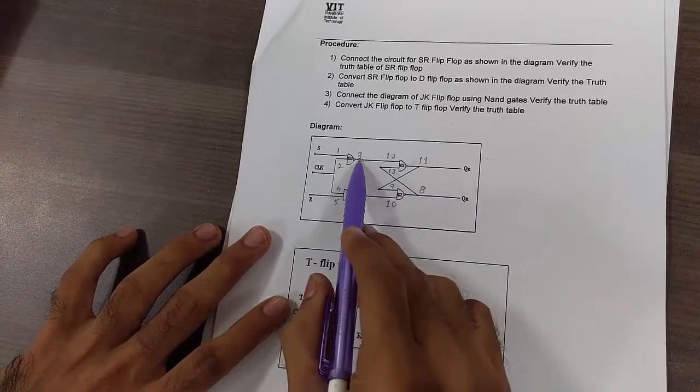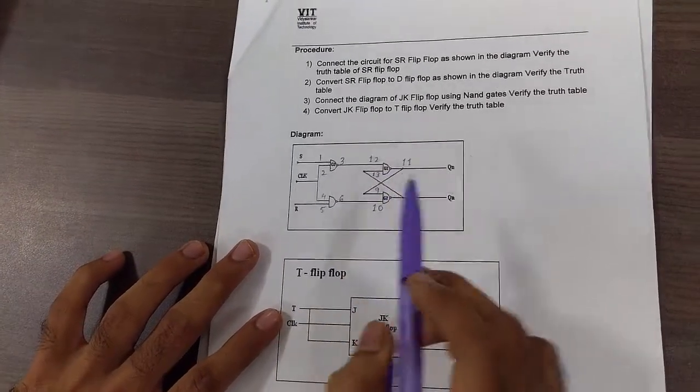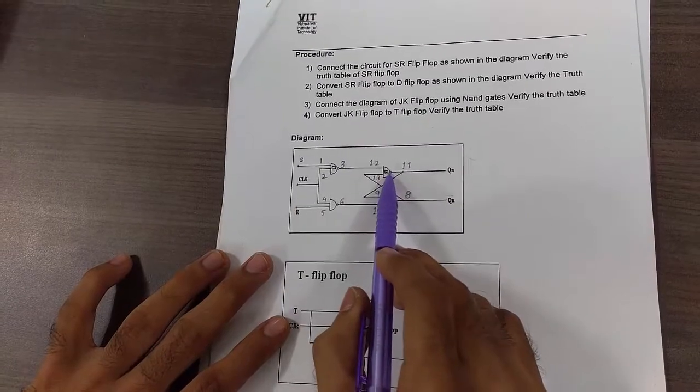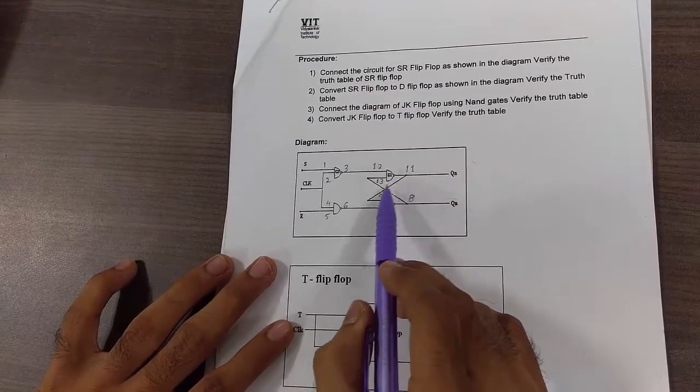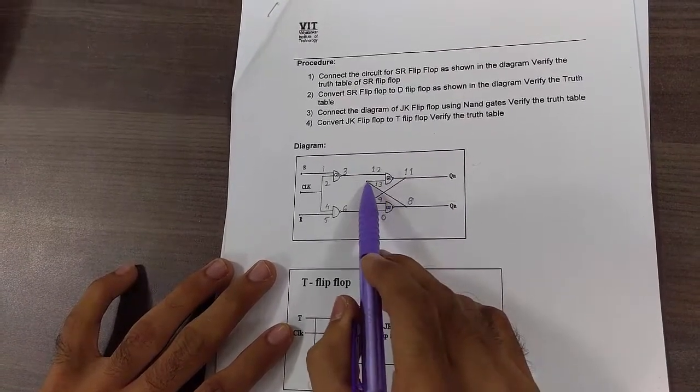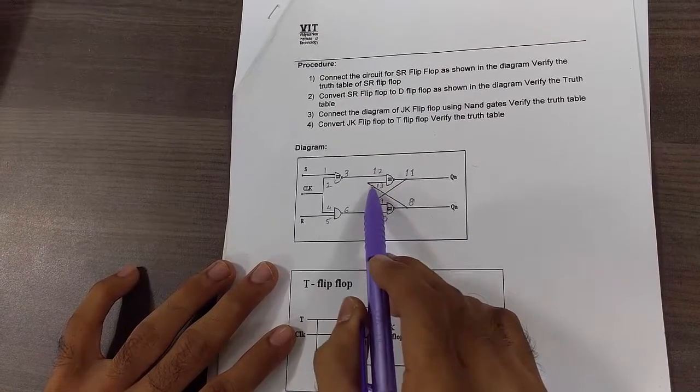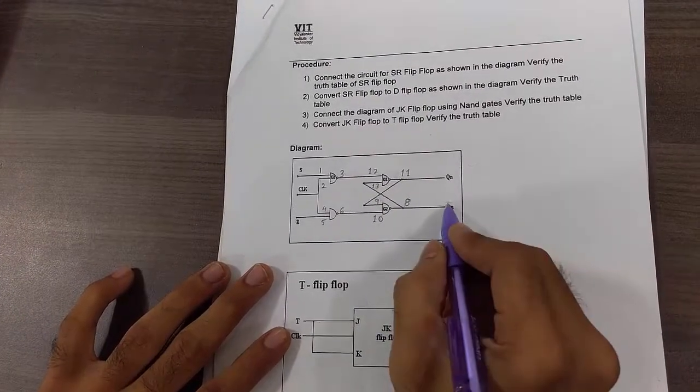The output of gate 1 and 2 are given to gate numbers 3 and 4 respectively. And then output of that is given as input to this gate and this input is given from the output of this. Now we get Qn and this is Qn bar.